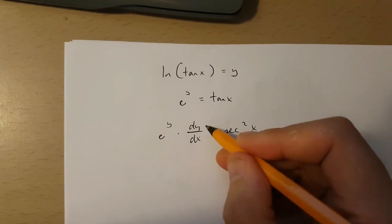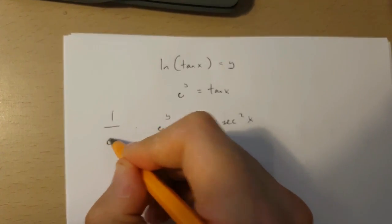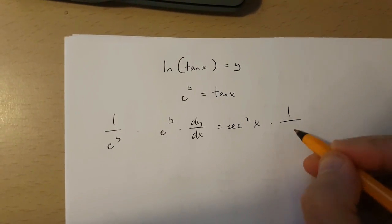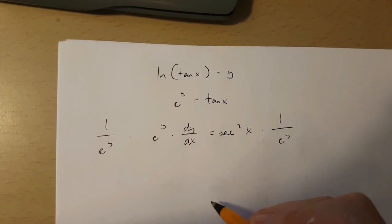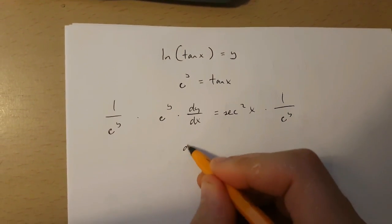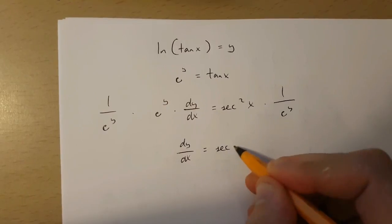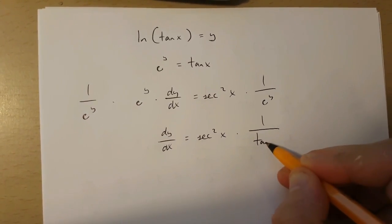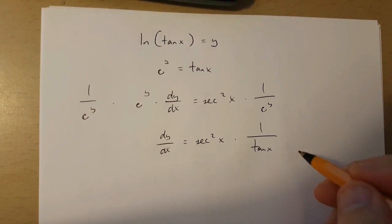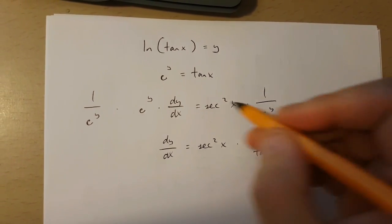Now to isolate dy over dx, all I have to do is multiply each side of this equation by 1 over e to the power of y. If I do this, I get dy over dx is equal to sec x squared times 1 over tan x. This is because tan x is equal to e to the power of y.